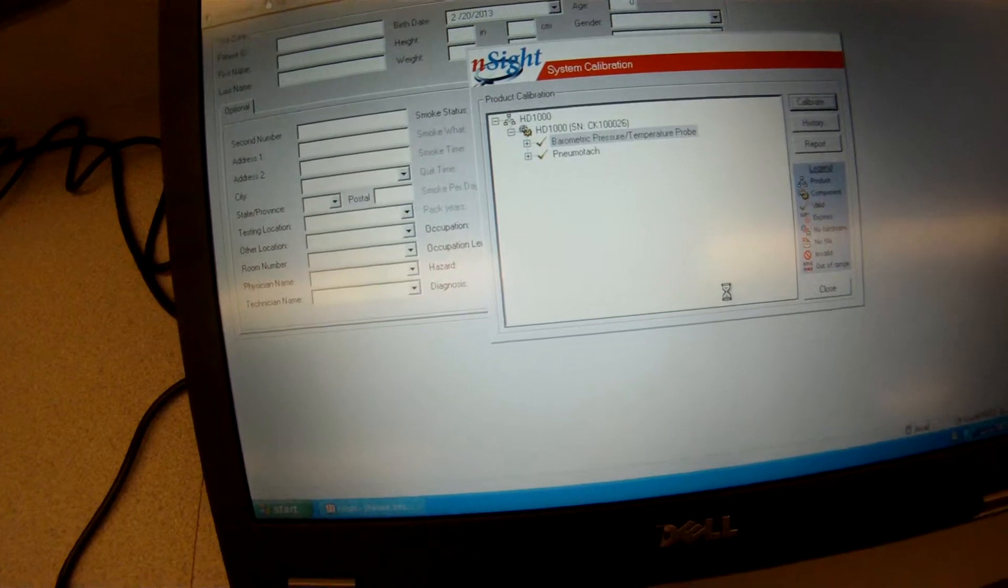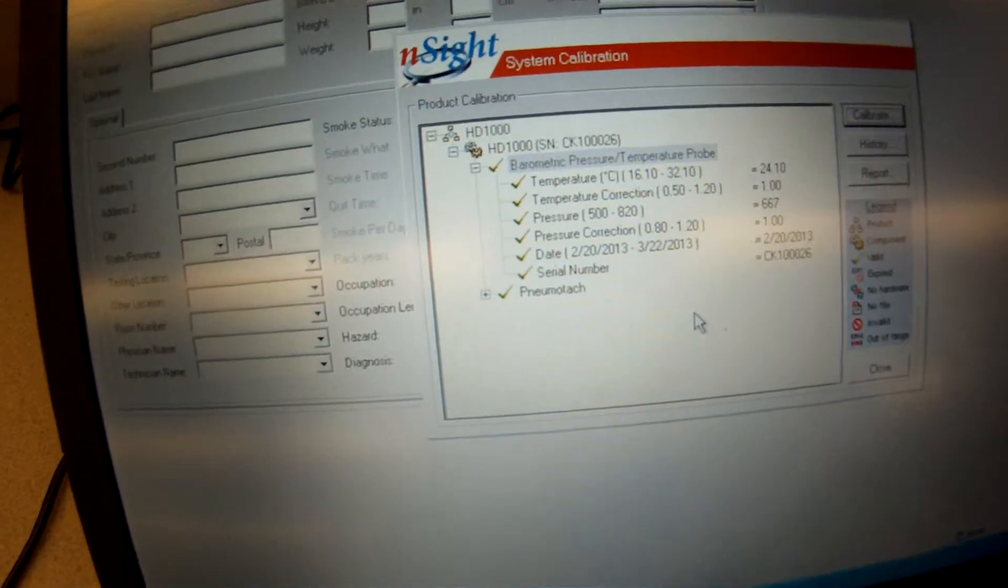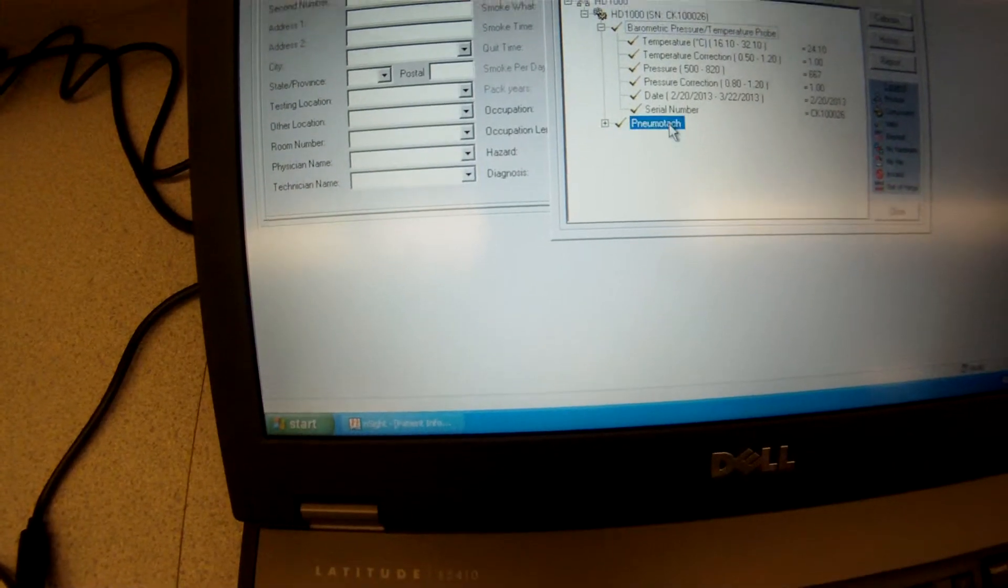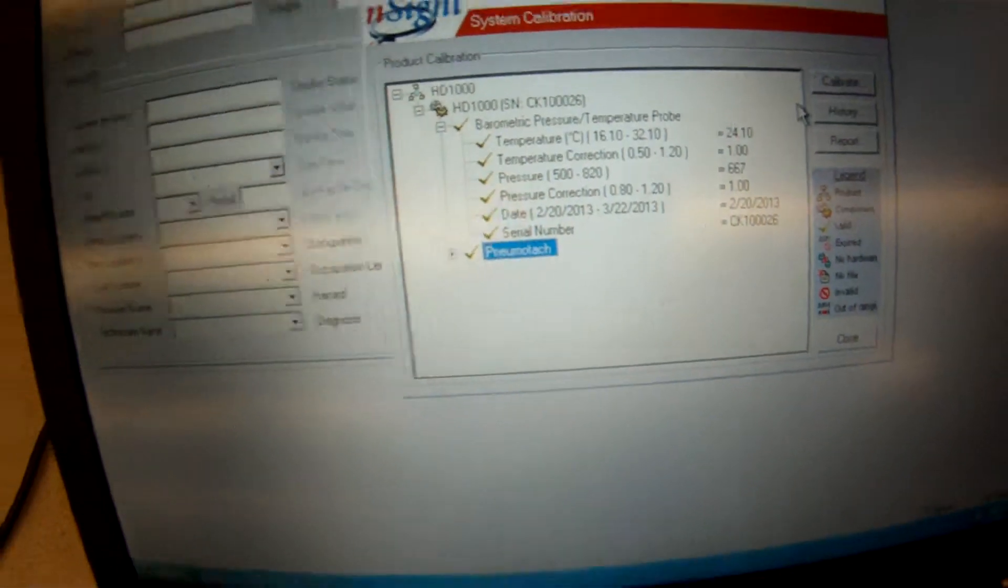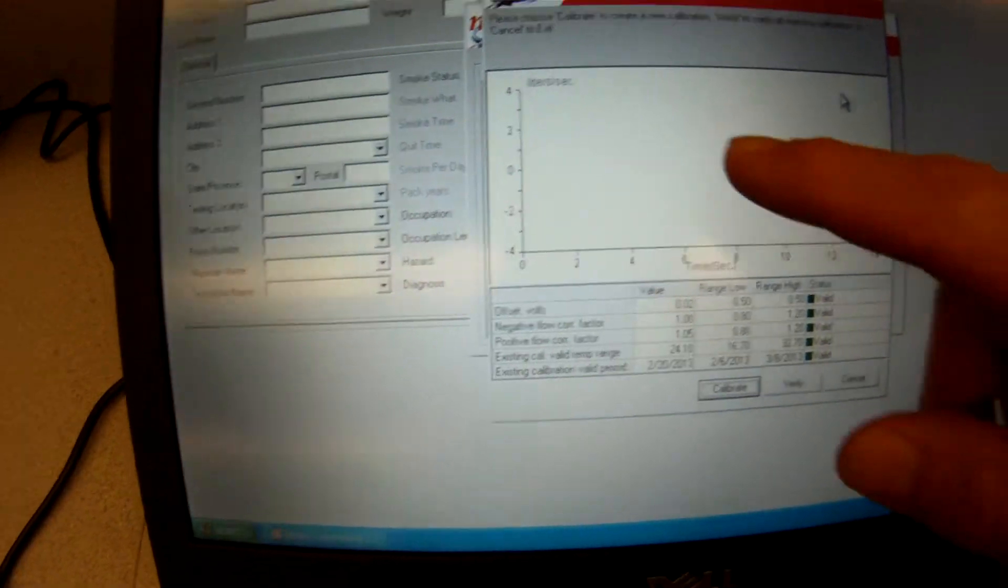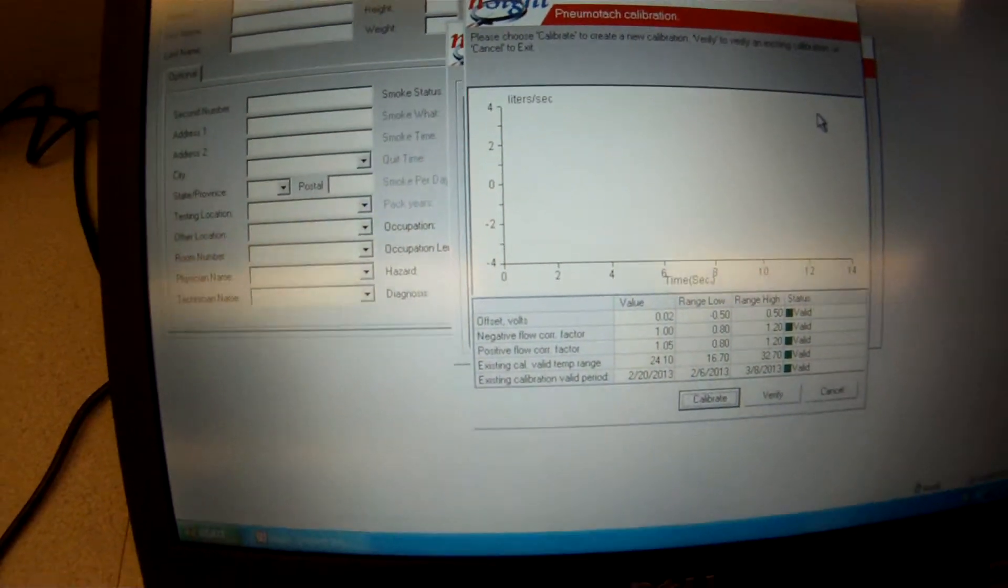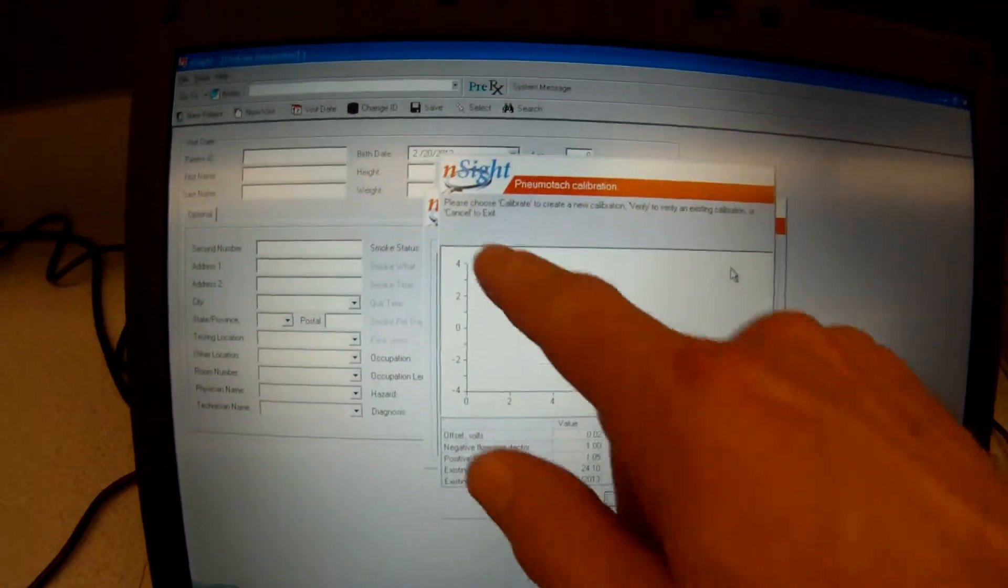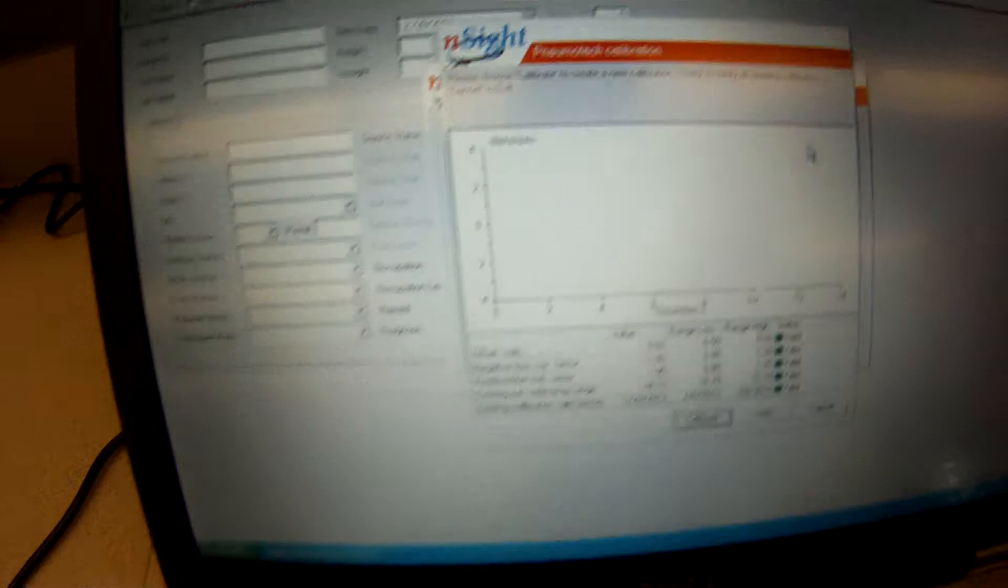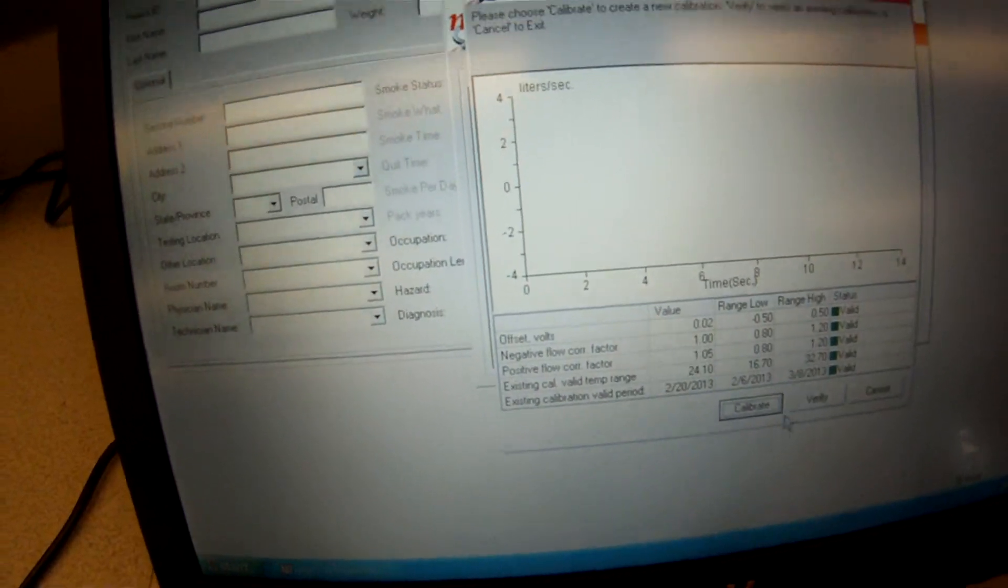Now we're going to actually calibrate the pneumotac. So to do that, we just click on here and we go up to the calibrate button. Click on that. It gives us a little screen telling us what to do. Follow the instructions carefully. Choose calibrate. So we're going to go down here, click on calibrate.